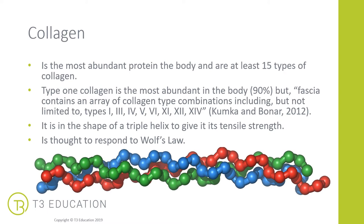Type 1 collagen is the most abundant in the body — around 90% — and it's found within the skin, bone, tendons, ligaments, and within the fascia. Fascia itself can contain an array of different collagen types, according to the Cum-Carma-Bona study, suggesting it's not limited to types between 1 and 24. The shape of collagen is a triple helix, which gives it its tensile strength, and gram for gram it's been suggested that collagen is stronger than steel — a really strong fibre within the body.